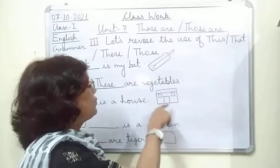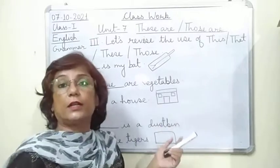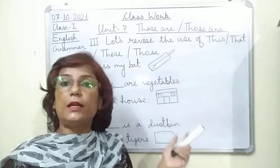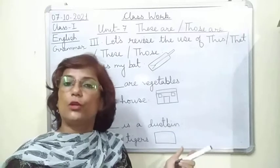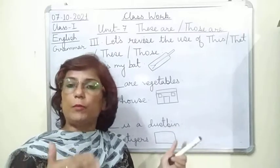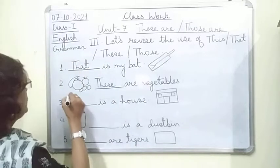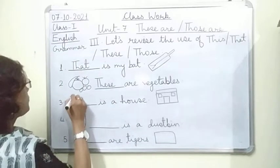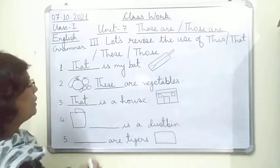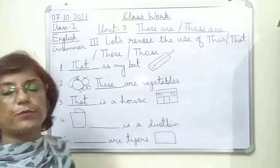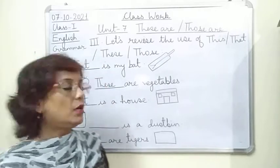For the house: the picture of the house is after the sentence, meaning it is far. So the answer is: That is a house.